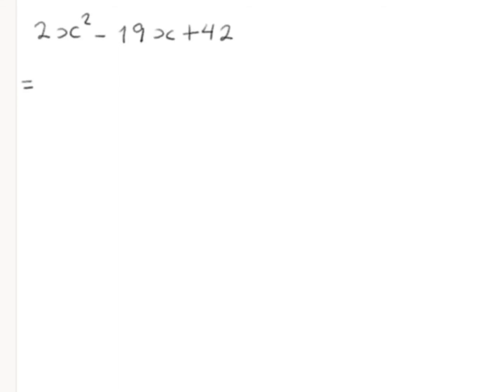So we have to factor 2x squared. There is only one way: 2x and x. And the constant term is positive and the middle term is negative. Therefore, both brackets must have negative.